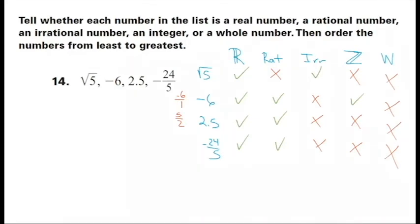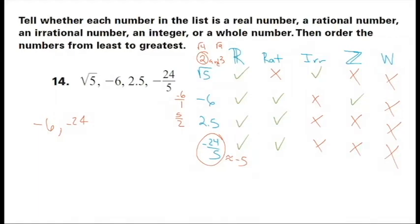What I want to do now is approximate these things. The square root of five is about negative 5. The square root of five is between two and three, but it's closer to two because two is the square root of four and three is the square root of nine. Now I need to put them in order from smallest to biggest.